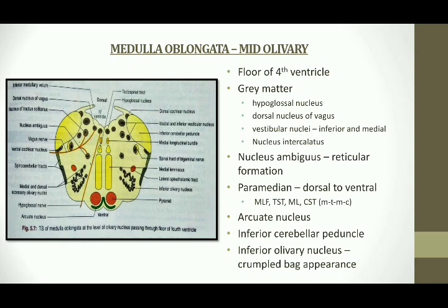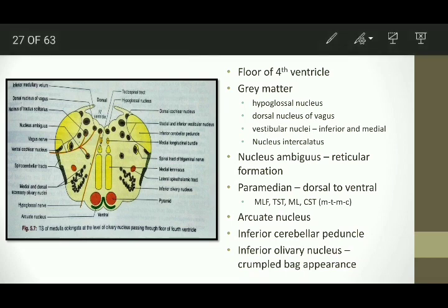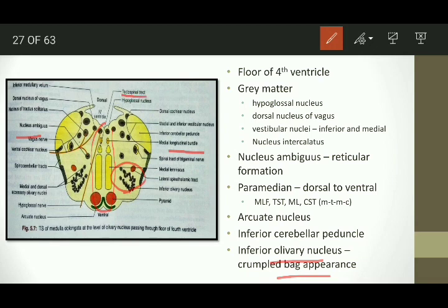The uppermost section is the mid-olivary level, behind which the 4th ventricle is present. Identification of this section in histology is by the crumpled bag appearance of the inferior olivary nucleus. The grey matter consists of the 8th, 10th, and 12th nerve nucleus and the nucleus intercalatus. Nucleus ambiguus takes part in the reticular formation. In the paramedian area, from dorsal to ventral, the following tracts are seen: the medial longitudinal bundle, the tectospinal tract, and the medial lemniscus. The pyramids are also seen here.